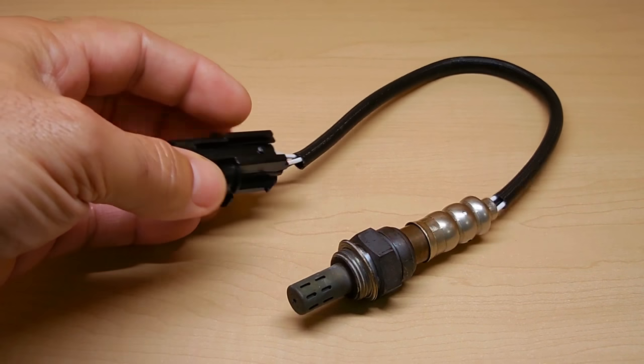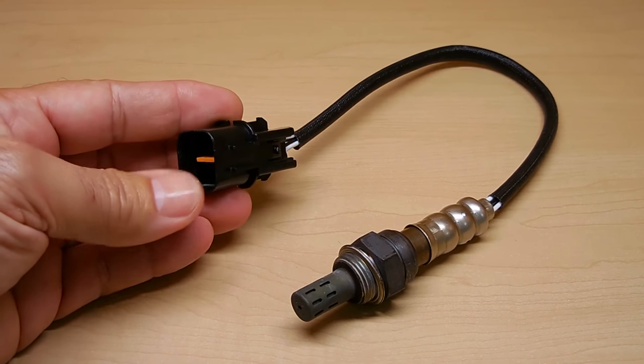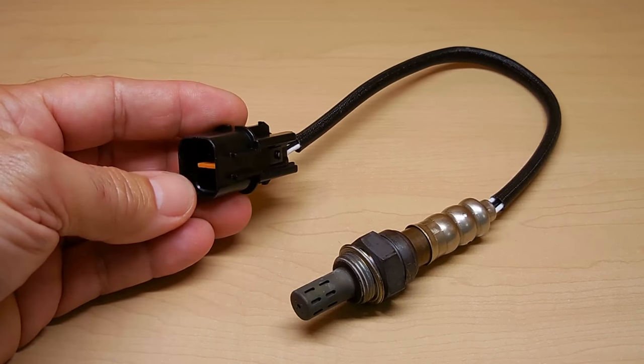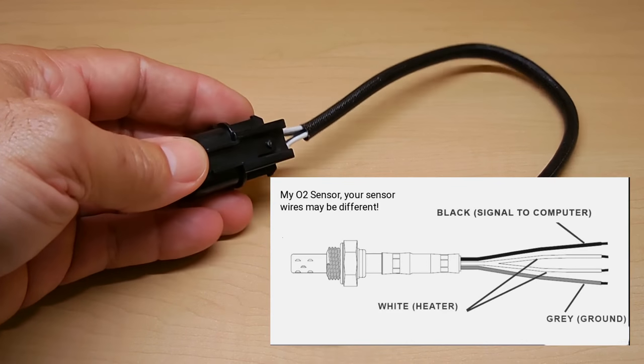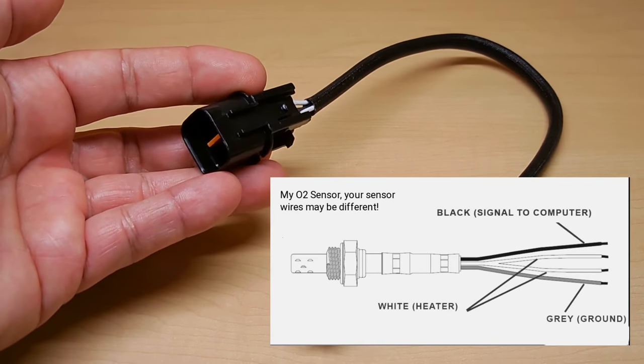So if I look this one up online, you want to check yours online to get the pin out for your vehicle. This one right here, the two whites are the heater, and it's very easy to identify if you have a four pin.